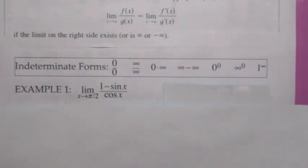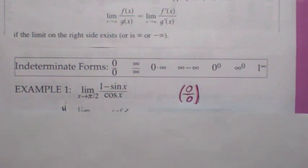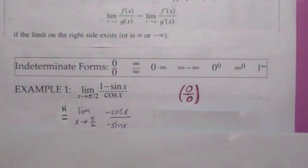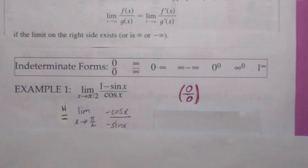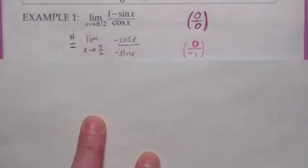Let's look at this example. The key to this section is trying to identify what form the limit has. Here, the top and bottom are both getting close to zero — so we have the zero over zero form. L'Hôpital's Rule says — you can write a little 'h' here to indicate you're using it — take the derivative of the top over the derivative of the bottom. Now, the top is getting close to zero and the bottom is getting close to negative one. That's not indeterminate; that equals zero.